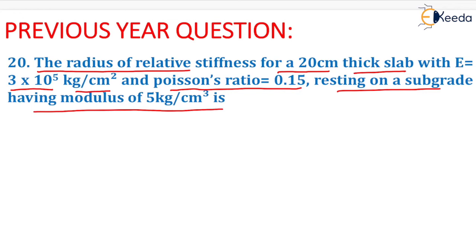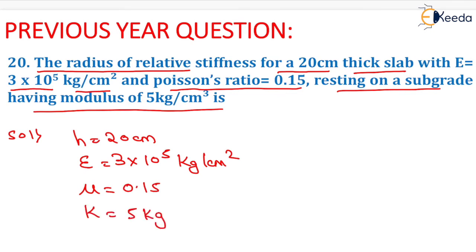We have to find the value of radius of relative stiffness. First of all, we will write the given quantities: h = 20 cm, E = 3 × 10^5 kg/cm², μ = 0.15, and k = 5 kg/cm³.